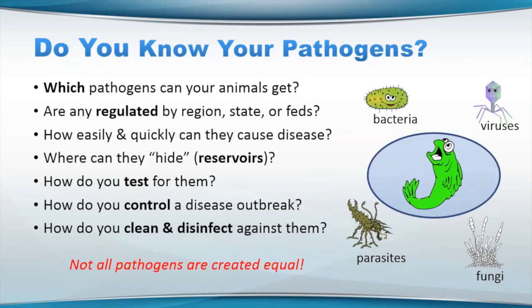Key questions: which pathogens can your specific species get? Are any of them regulated either by region, state, or by the feds? How easily and quickly can they cause disease? Where can they hide — we refer to these hiding spots as reservoirs. How do you test for them? How do you control a disease outbreak? And how do you clean and disinfect appropriately against them? This is a slide with what the World Organization for Animal Health, or the OIE, has listed as diseases that are of concern for international trade.